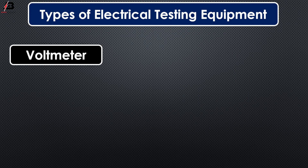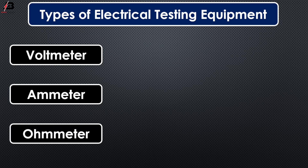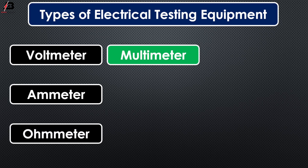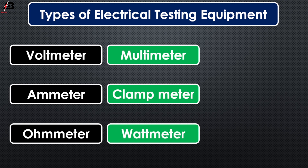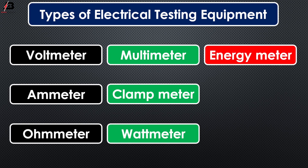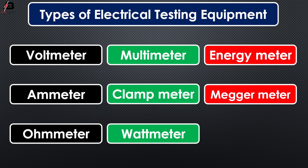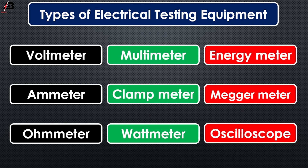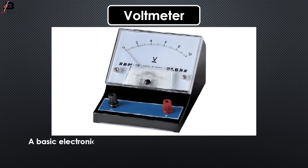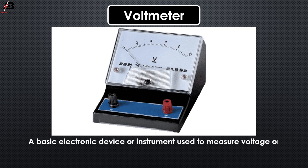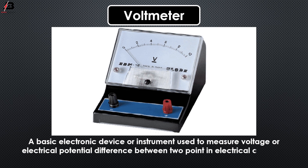Type of electrical testing equipment: 1. Voltmeter, 2. Ammeter, 3. Ohmmeter, 4. Multimeter, 5. Clamp meter, 6. Wattmeter, 7. Energy meter, 8. Megameter, 9. Oscilloscope. Voltmeter: A basic electronic device or instrument used to measure voltage or electrical potential differences between two points in an electrical circuit is known as a voltmeter.